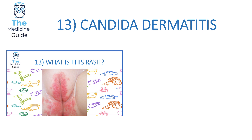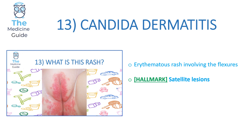Rash 13 is candida dermatitis, commonly known as diaper rash but in severe form. It is an erythematous rash involving the flexors. The hallmark feature to remember is that the child presents with satellite lesions — flat, pink, circular, isolated spots. Whenever any description alludes to satellite lesions or a picture shows them, that should immediately make you pick candida dermatitis.